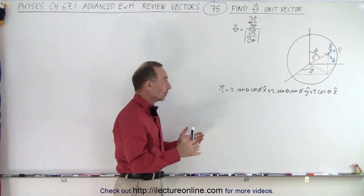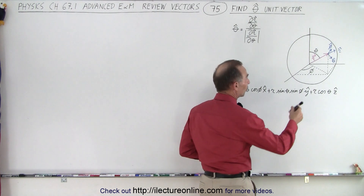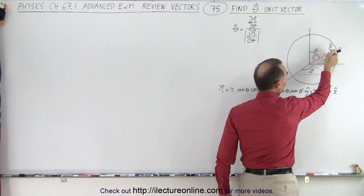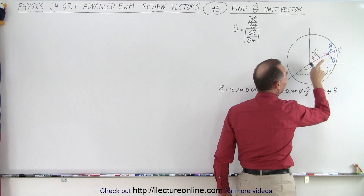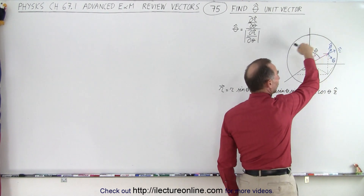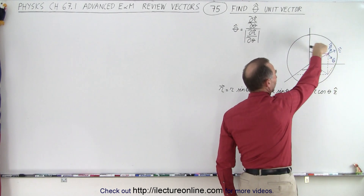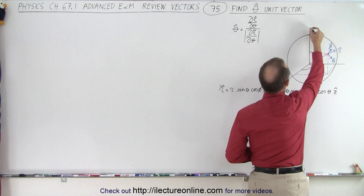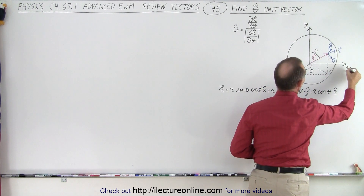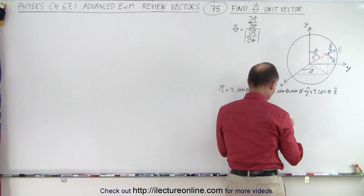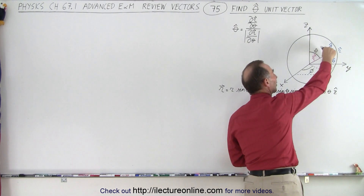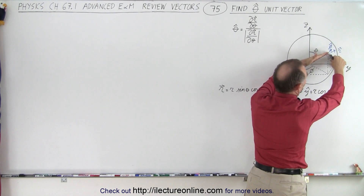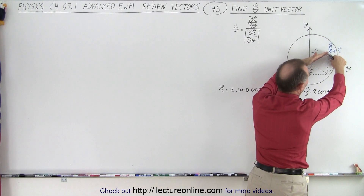In three-dimensional spherical coordinates, we have the r vector pointing away from the origin and the r unit vector pointing away from the origin. We have the phi unit vector which points in a counterclockwise direction around the z-axis. There's the z-axis, the y-axis, the x-axis, and then we have the theta unit vector which points perpendicular to the r vector — the vector that points out to the radius of the sphere.